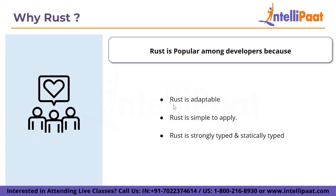Next, Rust is adaptable. It is built for performance and safety, particularly safe concurrency through the use of the borrow checker and ownership to validate references. Rust is also simple to apply — its syntax is similar to C++, making it easy to use and comprehend. Rust is strongly and statically typed, meaning code can be checked at compile time, and if compilation fails, there is no extra memory usage. Rust also has an API that provides memory safety and, like vectors, employs high-level functions.